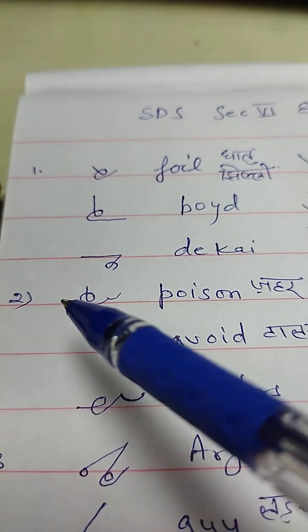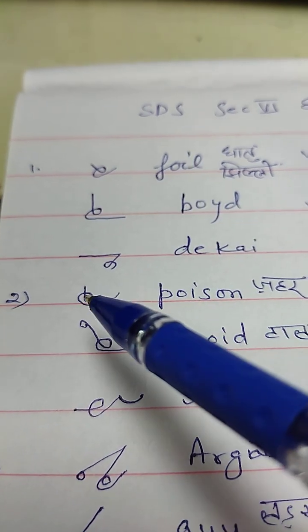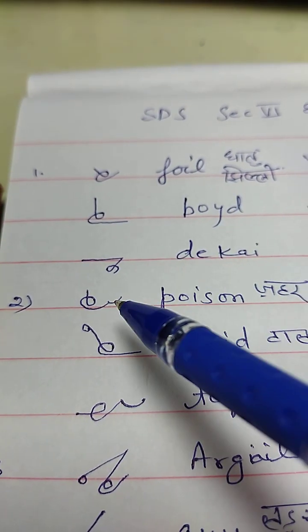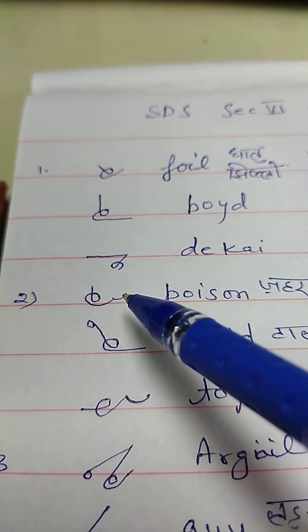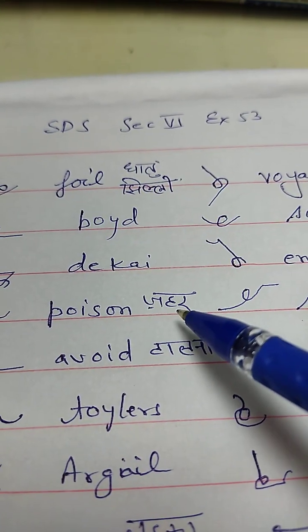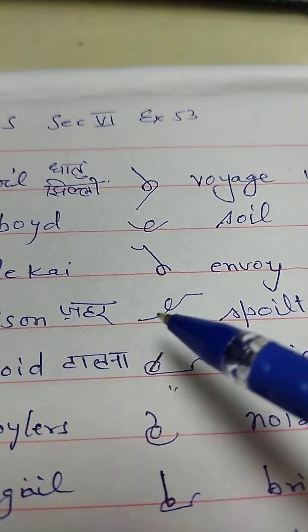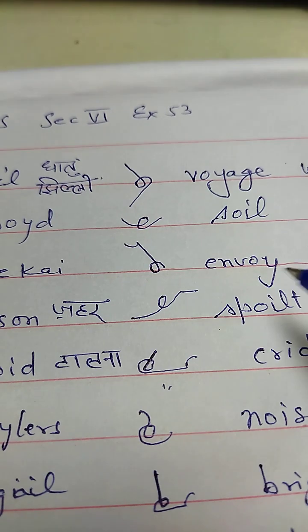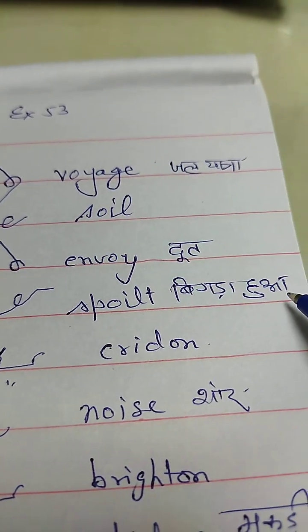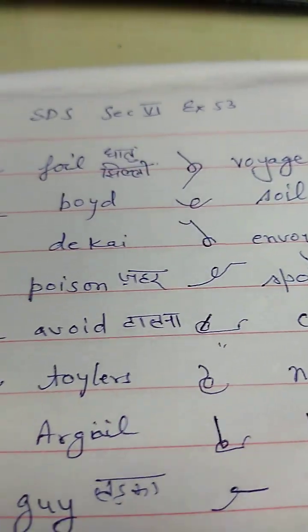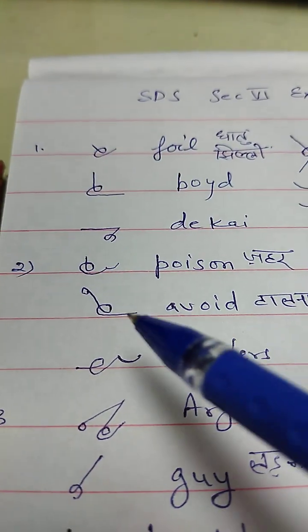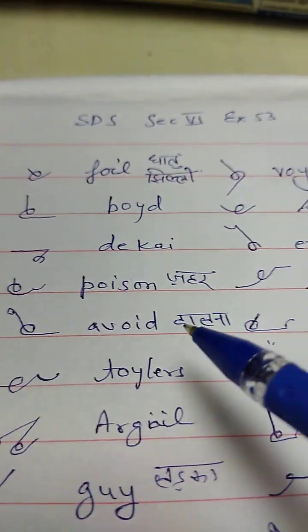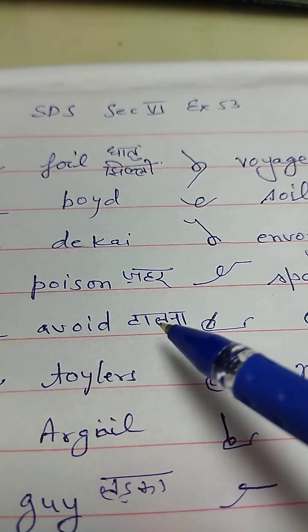Poison. Un-Poison — Zehr. Spoilt — Biggda Hua. Avoid — Talna.